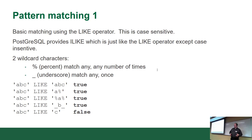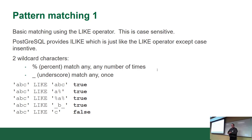There are two wildcard parameters: the percent sign (%), which means match any character any number of times; and the underscore (_), which means match exactly one character once.